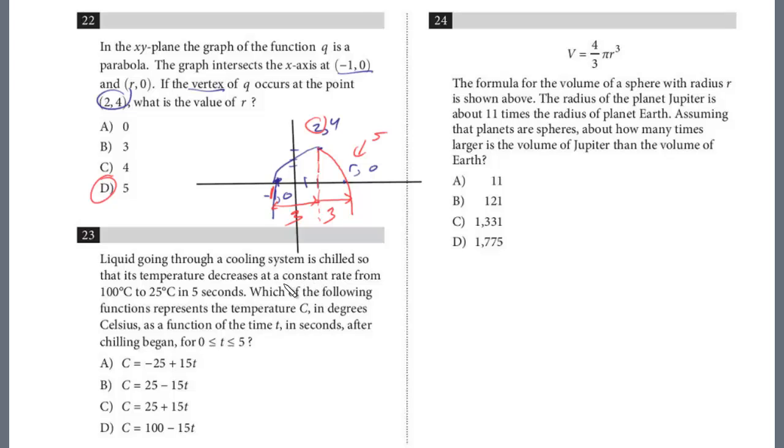The key here is they tell us it's a constant rate. And so you have to recognize this is a linear equation. The first step, let's figure out the slope. We started at 100 degrees and then decreased to 25. So a decrease of 75 degrees Celsius in 5 seconds. So it decreased 15 degrees Celsius per second.